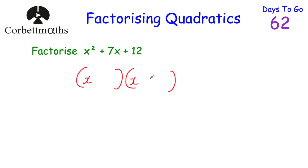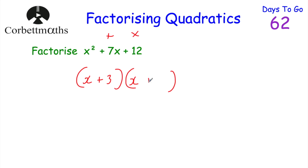In terms of finding what goes in the brackets, because this is just an x squared quadratic it's quite straightforward. We want to find two numbers which multiply together to give us 12, and also add together to give us 7. So the two numbers in the brackets will multiply together to give 12 and add together to give 7. I'm thinking 4 and 3, because 4 times 3 is 12 and 4 plus 3 is 7. So in our brackets we'll have x plus 3 and x plus 4.